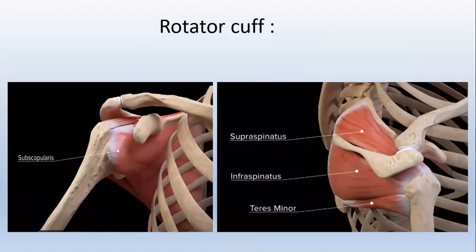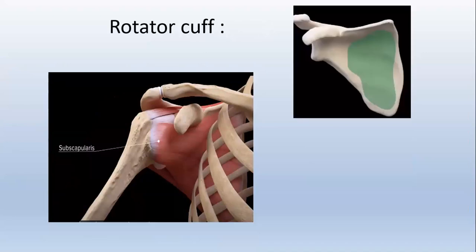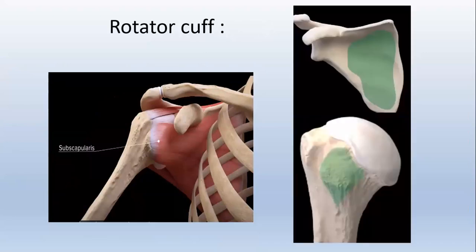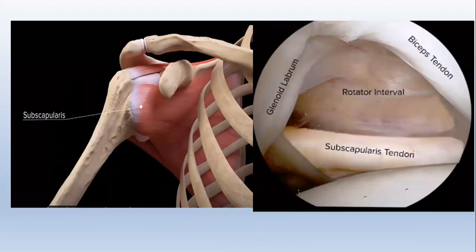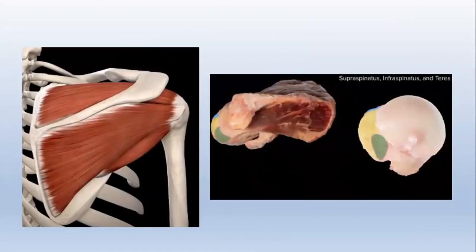The dynamic stabilizers include the rotator cuff: subscapularis anteriorly and supraspinatus, infraspinatus, and teres minor posteriorly. The subscapularis has its attachment to the subscapularis fossa and inserts into the lesser tubercle. It forms the rotator interval between the supraspinatus and subscapularis. Posteriorly, supraspinatus and infraspinatus originate from the supraspinatus fossa and infraspinatus fossa and insert into the greater tubercle.